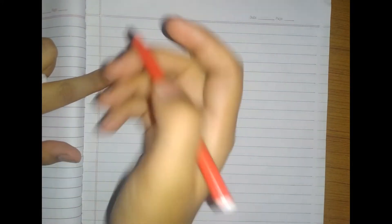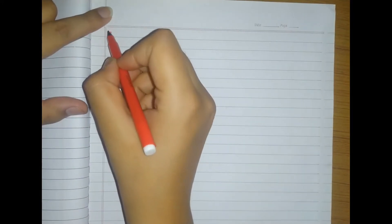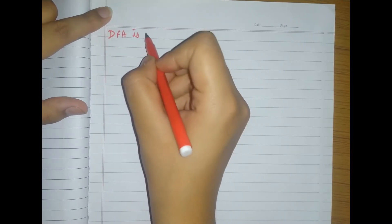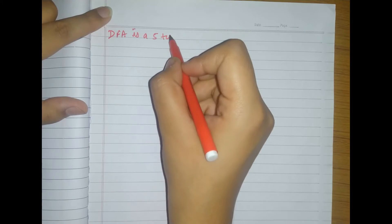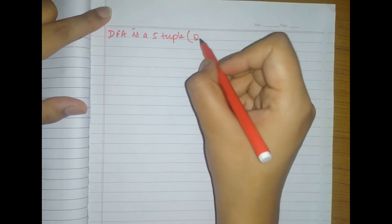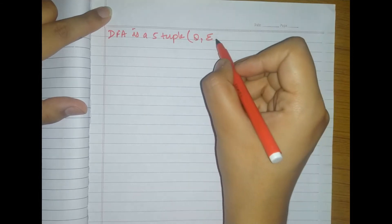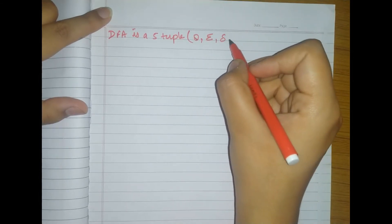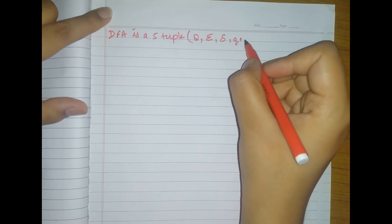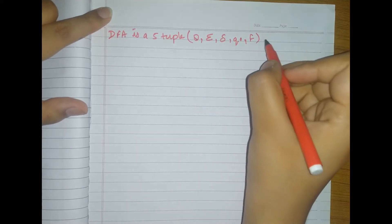So basically what it means is DFA is a 5-tuple and these are Q, this is sigma, this is the transition function, this is Q naught, and this is F.